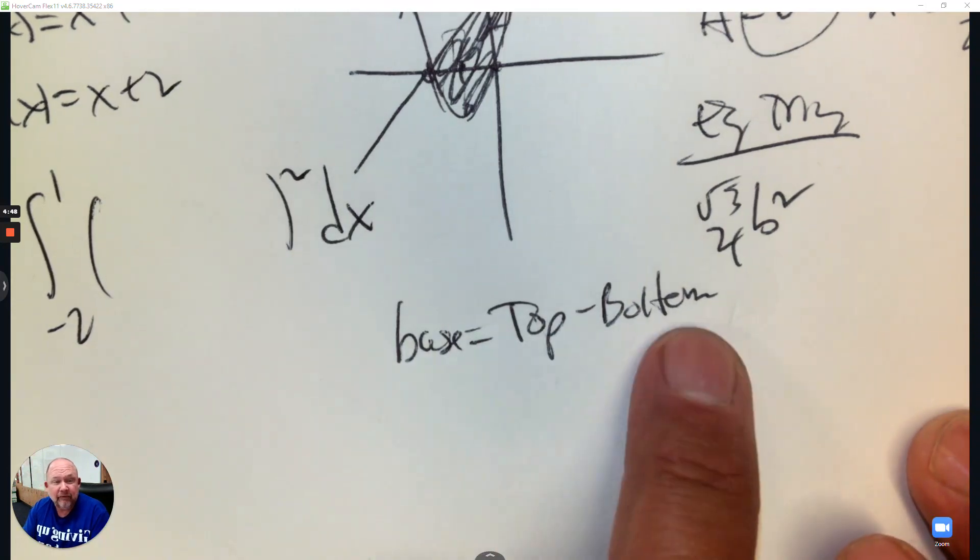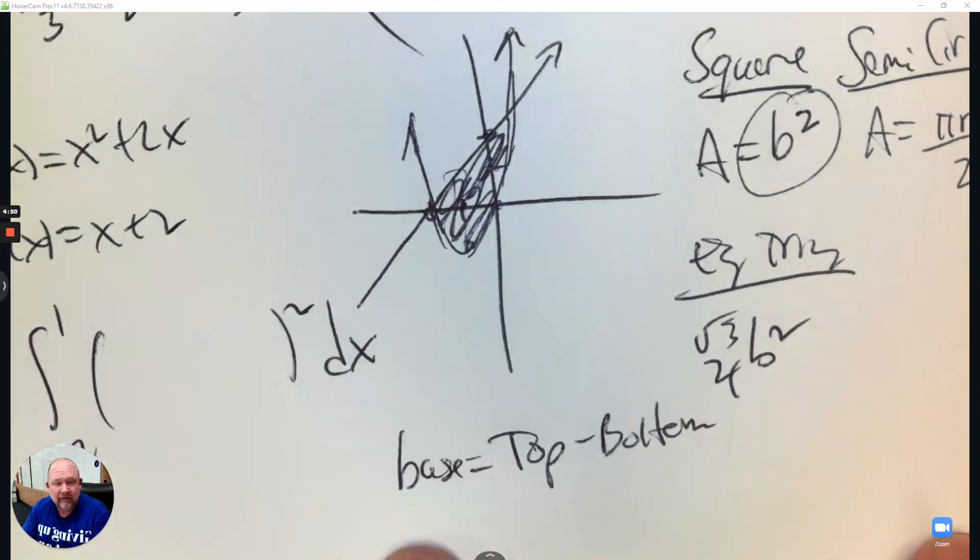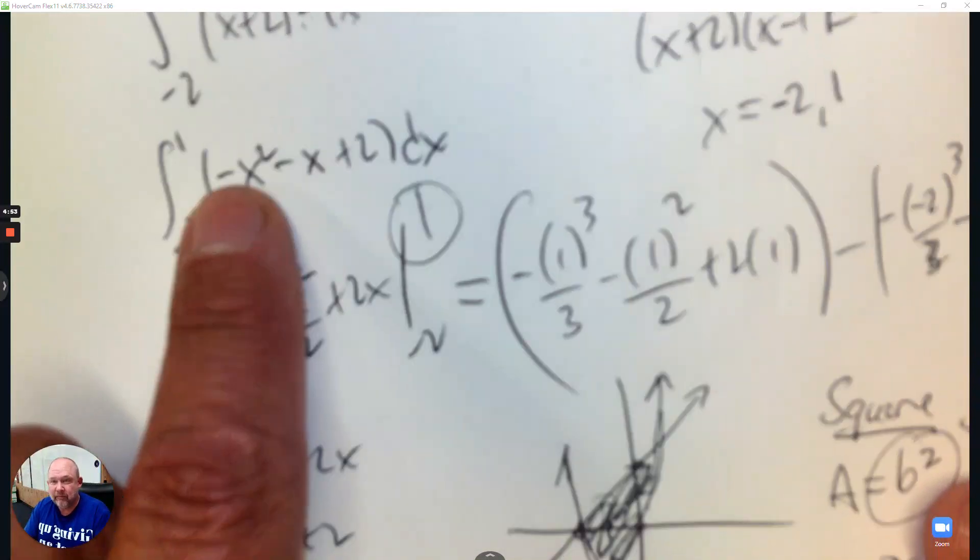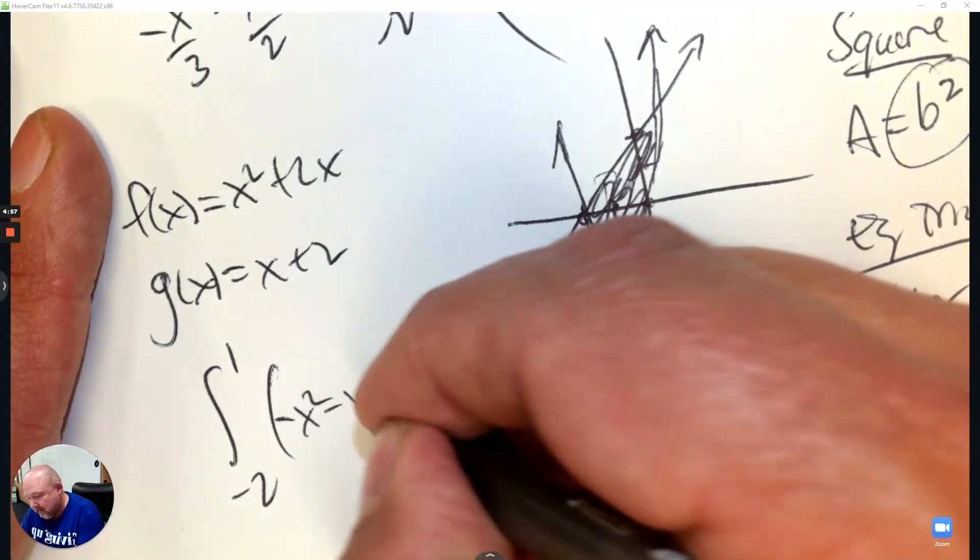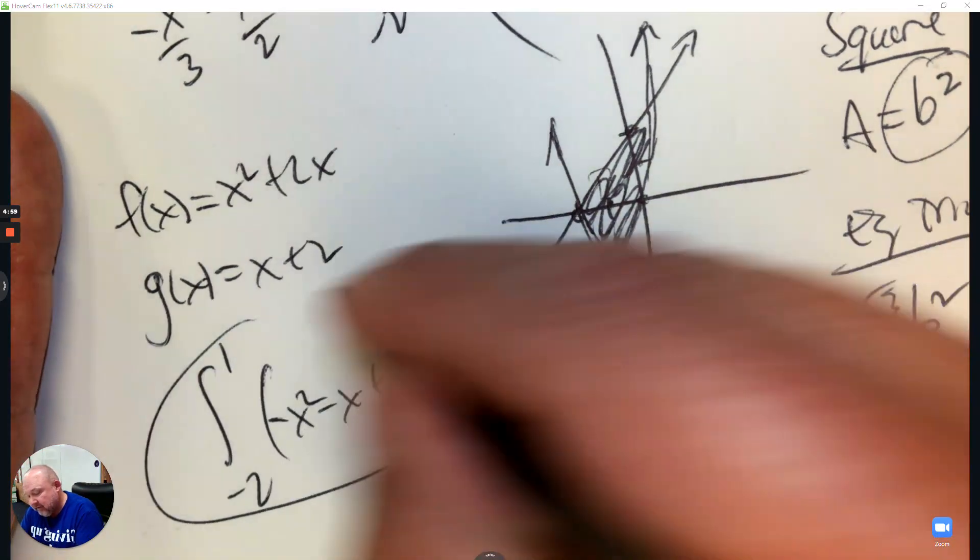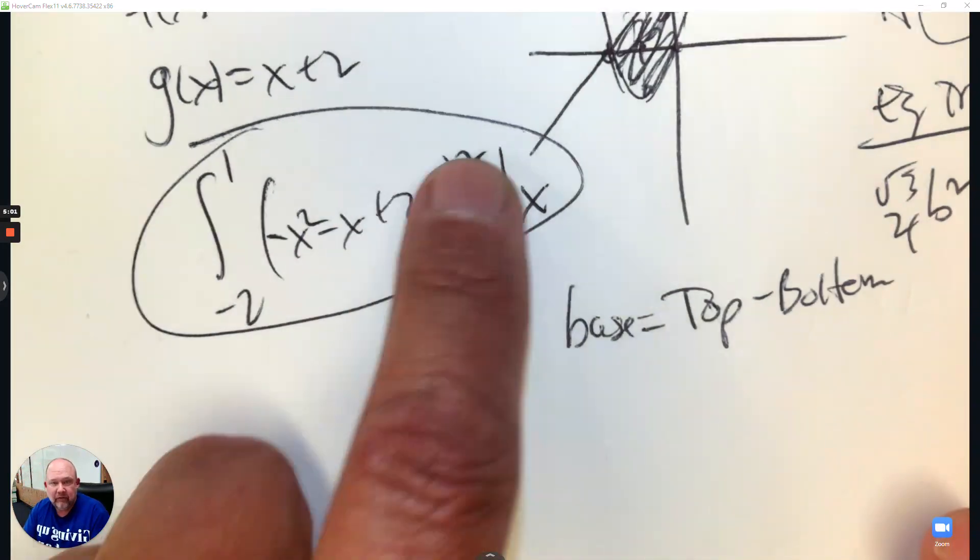So when you went top subtract bottom, that is the distance for the base of the square. We already went top subtract bottom, and this is what we came up with. So that's negative x squared minus x plus 2. There's the setup to find volume using a square.